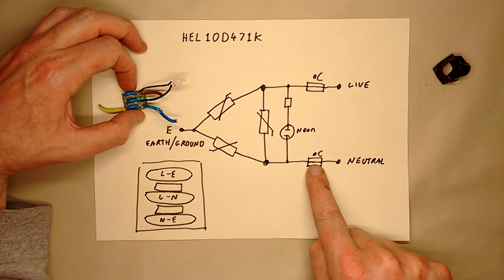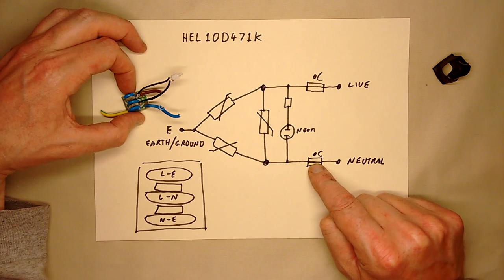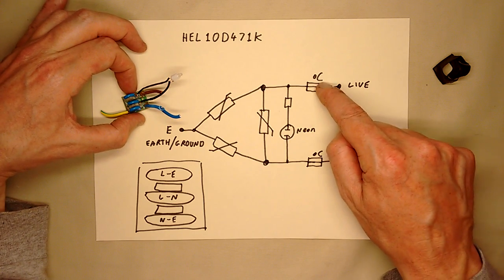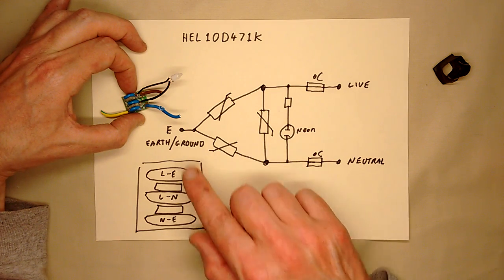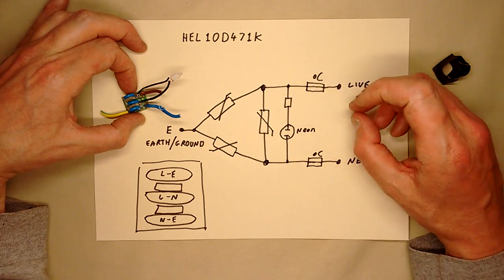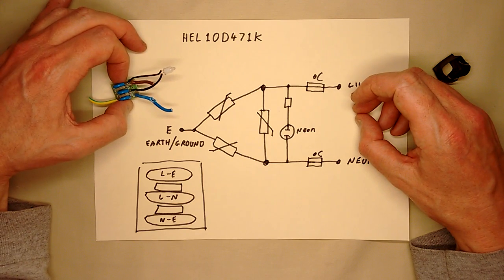However, that's slightly defeated theoretically if there was any leakage through this. If this thermal fuse went, you'd end up losing the live to neutral protection, but theoretically the live could find a path through the neon, and if this was leaking slightly it could find a route to earth. So it's not an infallible approach having the neon like that, but it should ultimately work, I guess.